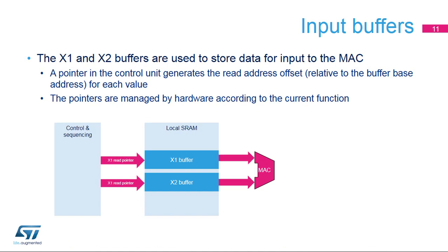Each multiplication takes a value from the X1 buffer and a value from the X2 buffer and multiplies them together. A pointer in the control unit generates the read address offset relative to the buffer base address for each value. The pointers are managed by hardware according to the current function.